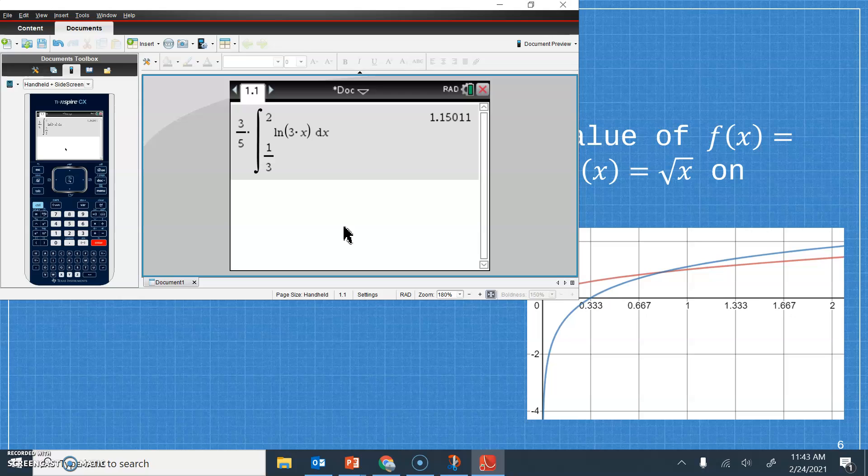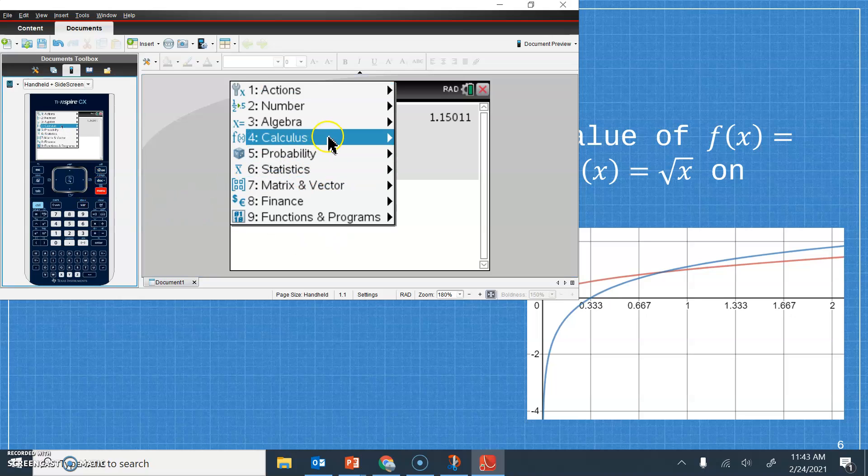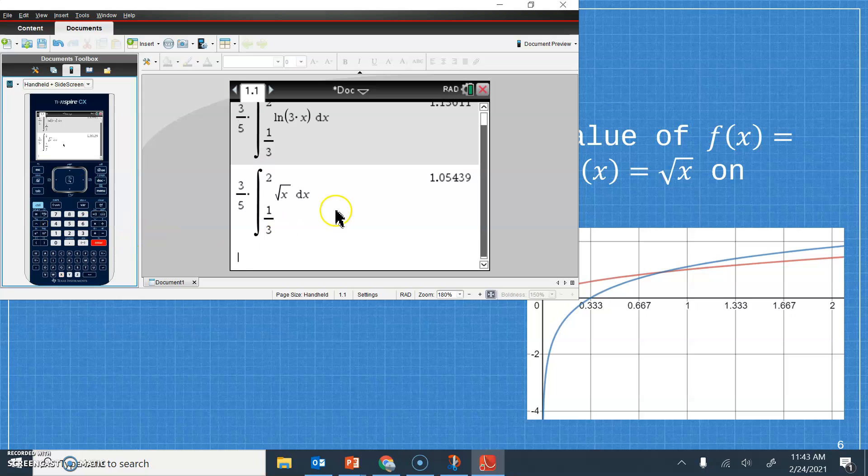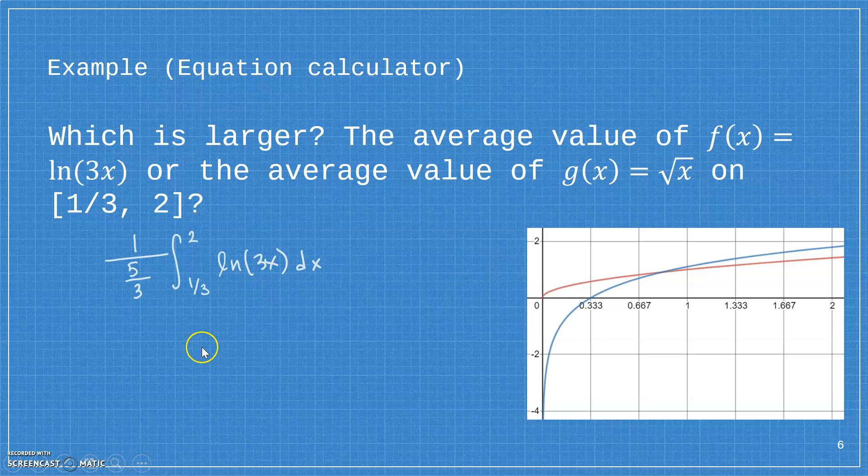And so that's the average value of the natural log function. And then I'm going to do the same thing for the square root function. And it looks like the natural log function, even though it starts off smaller, winds up having a larger average value than the square root function on that interval. It's easy to forget that you can use a calculator on a calculator portion of a test. So just don't forget to do that and don't try to do these integrals by hand if you don't have to.